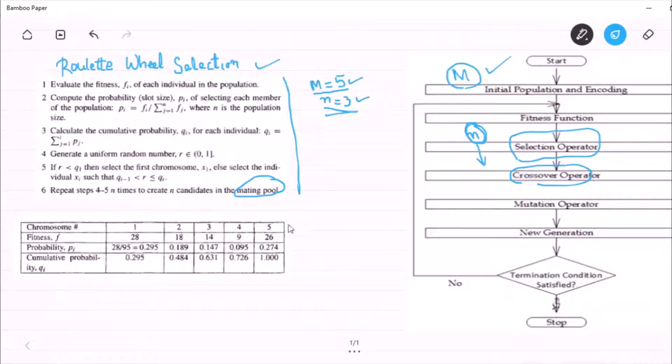Now, out of this 5, we have listed the chromosome there. This 5 are nothing but 5 chromosomes. And we have to calculate their fitness value using the fitness function.